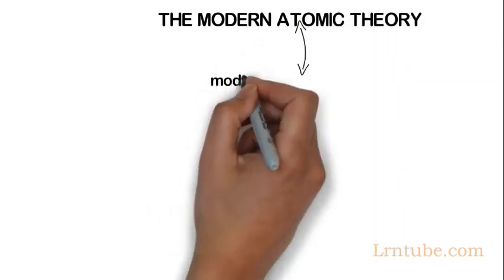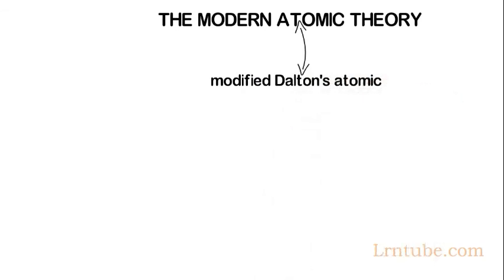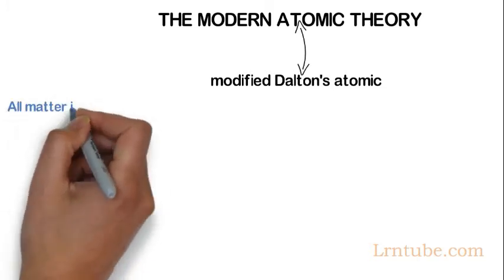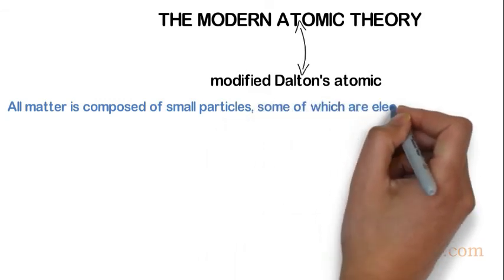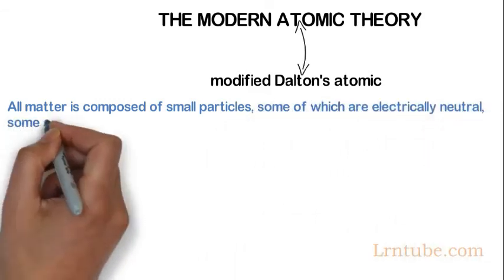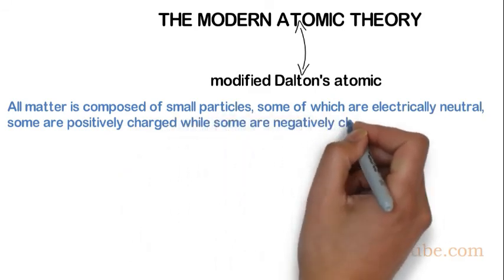The modified Dalton's atomic theory is called the modern atomic theory and consists of the following features. All matter is composed of small particles, some of which are electrically neutral, some are positively charged while others are negatively charged.